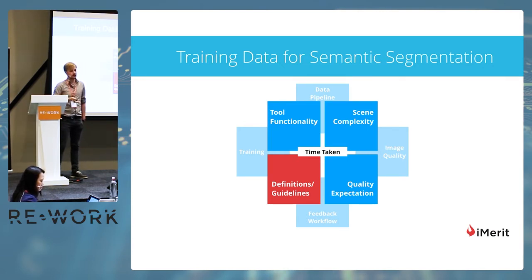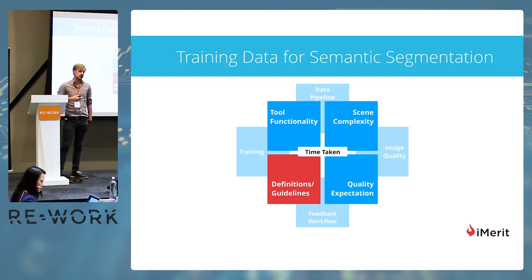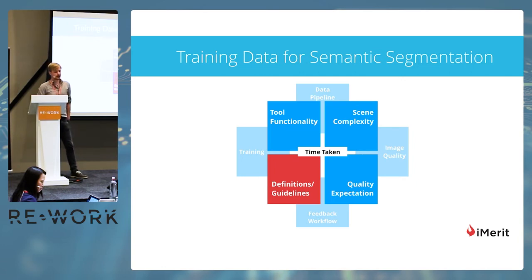I would argue that there are two main impacts this last point — definitions and guidelines — has. One is obviously the time taken: optimizing these definitions and guidelines means less time spent and thereby higher throughput of images. But it also has a clear result on data set quality and usability. If the definitions and guidelines are not ambiguous, you have fewer rework cycles and fewer false positives within your data set.